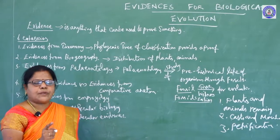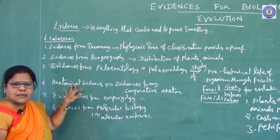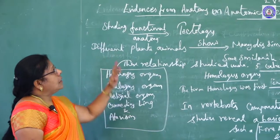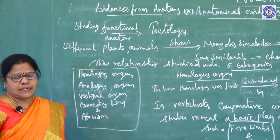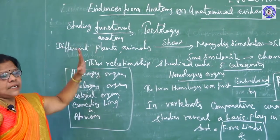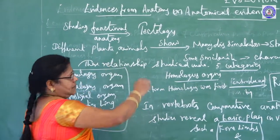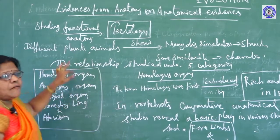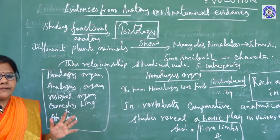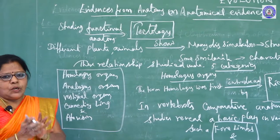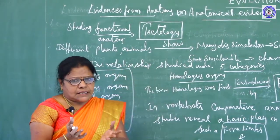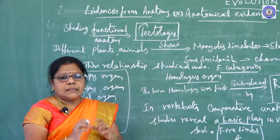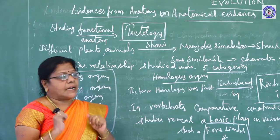Today I am going to explain anatomical evidences, embryological evidences, and molecular evidences. First, evidences from anatomy, or anatomical evidences. Studying functional anatomy is called tectology. Different plants and animals show many dissimilarities in their structure and some similarities in their characters. These relationships are studied under five categories.